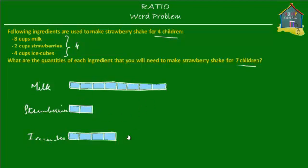Now, all of this is for four children. So if all of this is for four children, then how much is for one child? We have eight cups of milk for four children. Four children get eight units, so how much does each child get? It's simply eight divided by four. Each child gets this divided into four parts — one brown block equal to two units, or two cups. So child one gets two cups, child two gets two cups, child three gets two cups, and child four gets the last two cups. That's for milk.